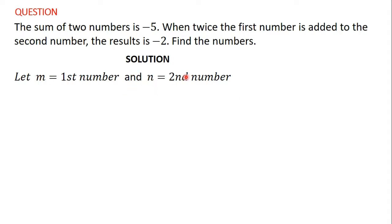Now with this new information, let's tackle the question again. The sum of two numbers is negative 5, which means that if you add these two numbers, you should get negative 5. So m plus n is equal to negative 5. That is equation 1.